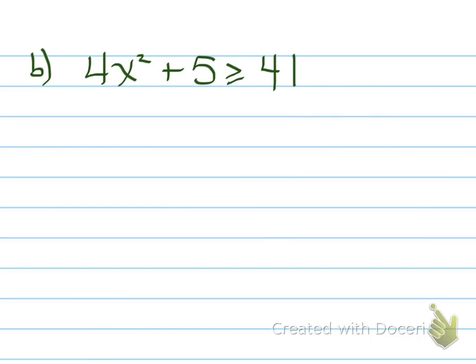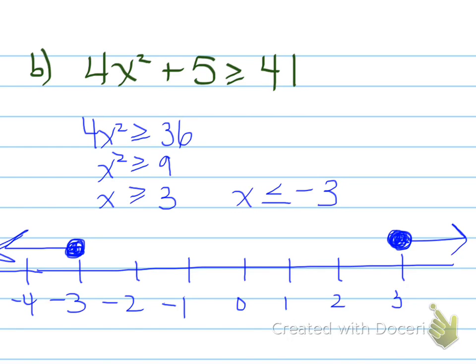Part B, 4x squared plus 5 is greater than or equal to 41. So 4x squared is greater than or equal to 36. That means x squared is greater than 9. Just like the last problem, we say x is greater than or equal to 3, or x is less than or equal to negative 3. Because we introduced a negative value from something that was originally positive, it's essentially like multiplying by a negative value.